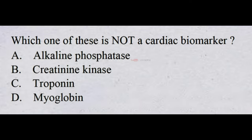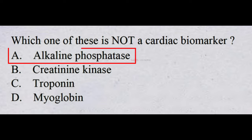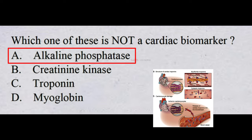Which one of these is not a cardiac biomarker? A. alkaline phosphatase, B. creatinine kinase, C. troponin, D. myoglobin. The correct answer is A, alkaline phosphatase.